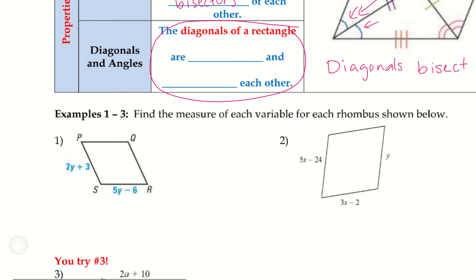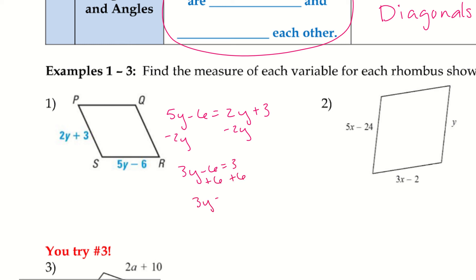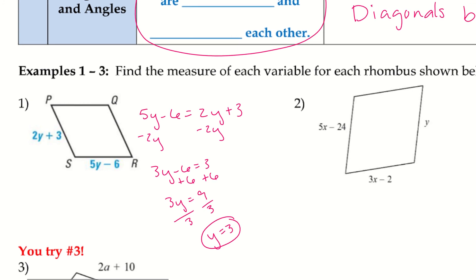Let's put some of these properties into play. For number one, in a rhombus all four sides are exactly the same, so I'll set 5y − 6 equal to 2y + 3. Subtracting 2y from both sides gives 3y − 6 = 3. Adding 6 gives 3y = 9, and dividing by 3 gives y = 3.